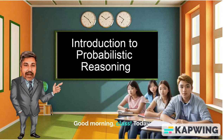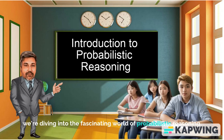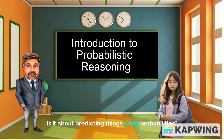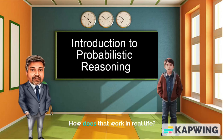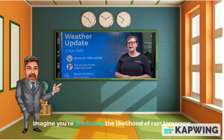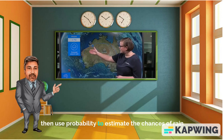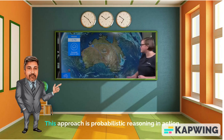Good morning class, today we are diving into the fascinating world of probabilistic reasoning. Probabilistic reasoning involves making sense of uncertain elements by assigning probabilities to various outcomes. In real life, imagine you are predicting the likelihood of rain tomorrow — we gather historical weather data, current atmospheric conditions, and then use probability to estimate the chance of rain.